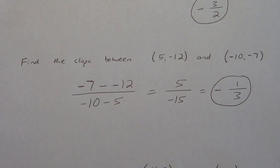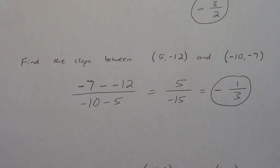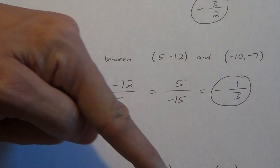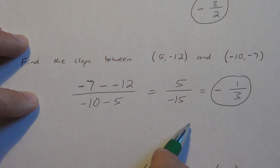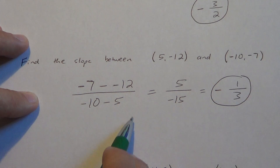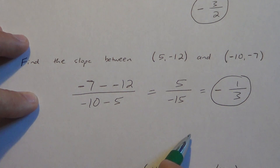Negative 1 third is one we would not want to change to a decimal — it's just 0.3333 repeating. It's much easier to graph using rise over run: I know I rise 1 unit when I run 3 units. But knowing it's a negative slope — it's going downward — I would go over 3 and down 1, over 3 and down 1. The run is 3 and the rise is negative 1, meaning down 1 and 3 to the right.